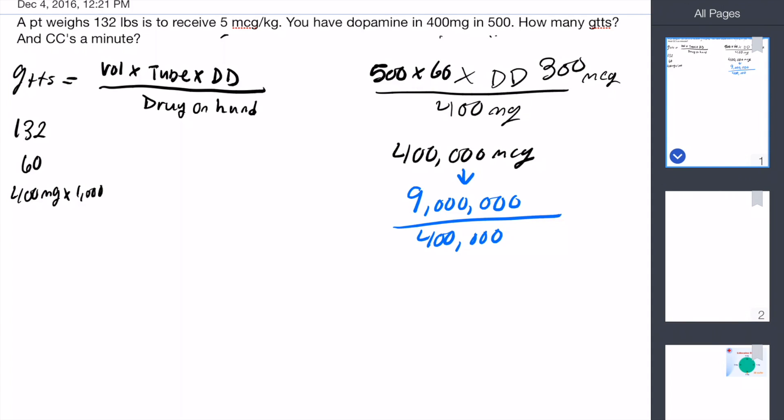We divide that by 400,000, and when we do the math we'll get 22.5.